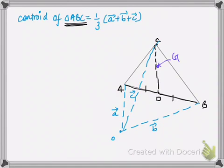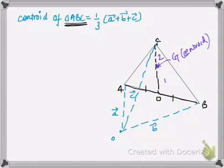Now point G is our centroid. The centroid divides the median in the ratio 2:1. This is a property of the centroid that you should know before solving this problem. I'll also be joining point O to point D, and point O to point G. The diagram looks complicated but it is not.